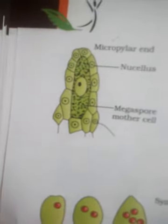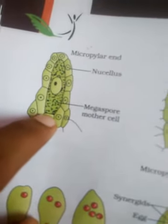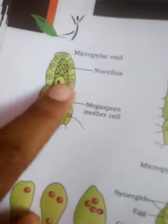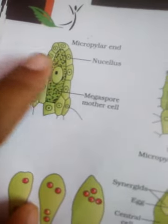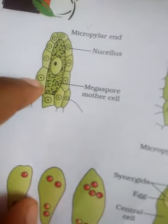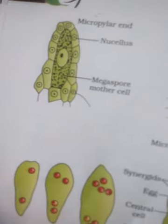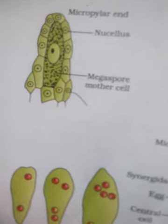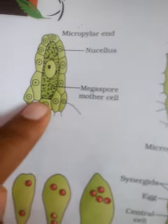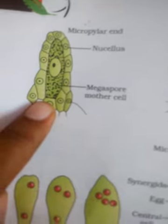In figure 2.8A you can see the cells of the nucellus, and this large elongated cell with dense cytoplasm and a big nucleus is the megaspore mother cell or MMC. In the androecium we had seen the pollen mother cell; here this is the megaspore mother cell or MMC. After division it will form the megaspores.